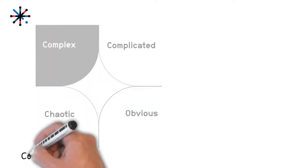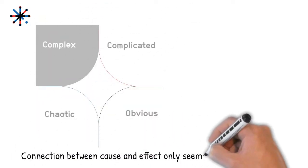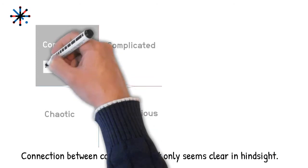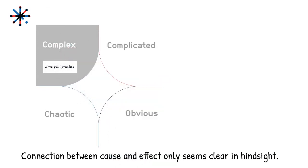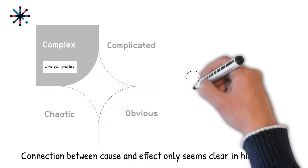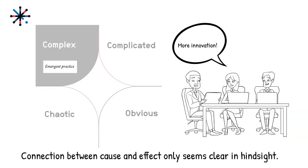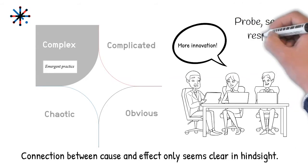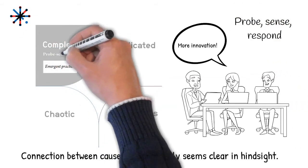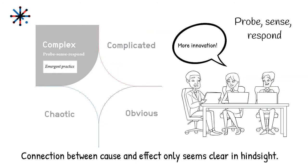In the complex domain, the connection between cause and effect only seems clear in hindsight. This is the domain where there are only emergent practices. An example is trying to change company culture. In these situations, the best strategy is to probe, sense, and respond: launch an experiment, observe what happens, and adjust accordingly.